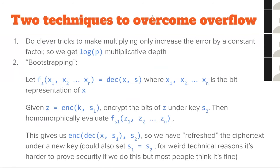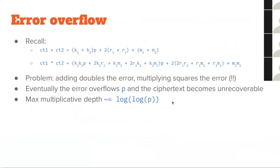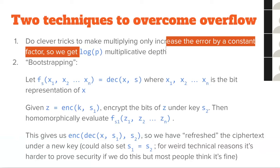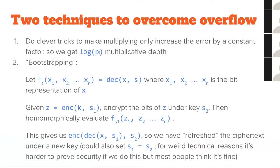How do we overcome this overflow problem? There are two general categories of solutions. The first is clever tricks to make multiplication only increase the error by a constant factor — so instead of log(log(P)) multiplicative depth you actually get log(P) depth. For example, if every multiplication increases error by a factor of 1,000 (only 10 bits), and your modulus has 10,000 bits, your multiplicative depth goes up to 1,000. The second solution is bootstrapping.